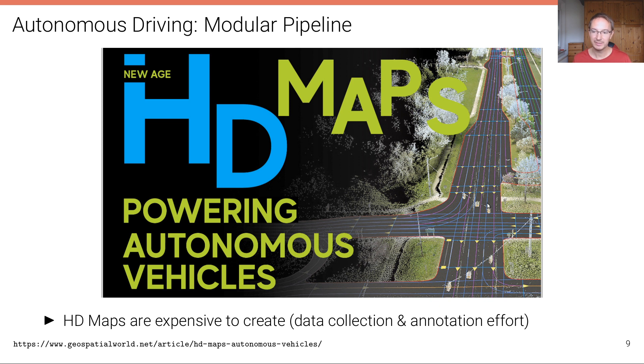Here's an example of an HD map where you can see the individual lanes that have been traced partially automatic but partially also by humans in a very time-consuming process with all the traffic lights, etc. These HD maps are very expensive to create and they can only be created and maintained up to date, think about construction sites, etc., for very small geofenced areas.